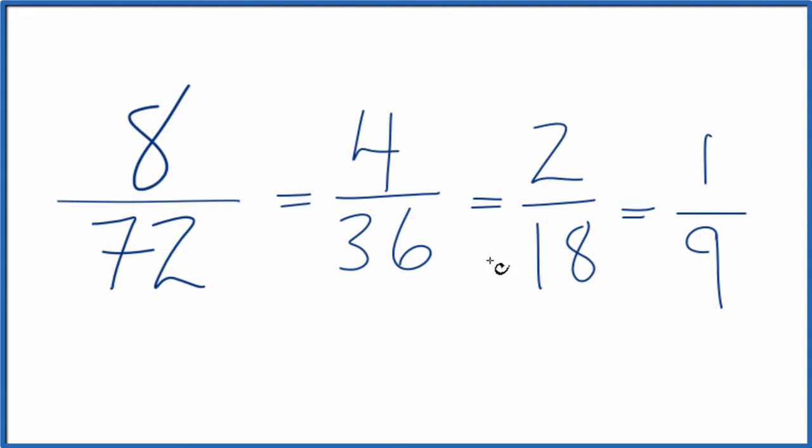So these are all equivalent fractions. They have the same value. If you divide 1 by 9, 2 by 18, 4 by 36, or 8 by 72, you'd get the same decimal number. It's just that when we reduce 8/72 to its simplest form, we get 1/9.